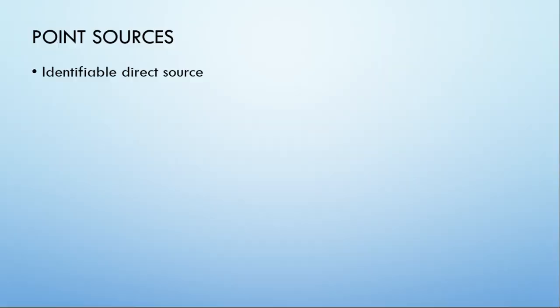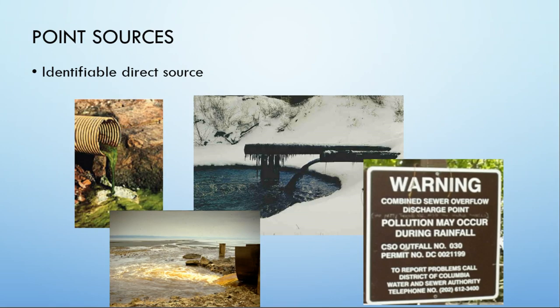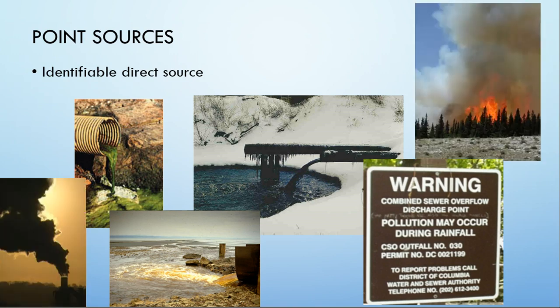A point source is something that has an identifiable direct source. You can see in this case there are all these pipes; in this case we've got a fire, we've got a stack. Any time where you can say 'this is the point.' Effluent is simply the output from a pipe or a source — it's typically a fluid, in this case a liquid.